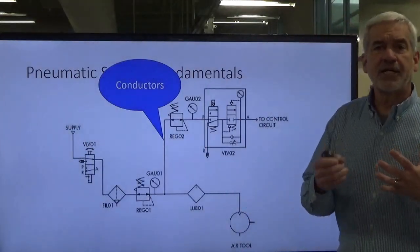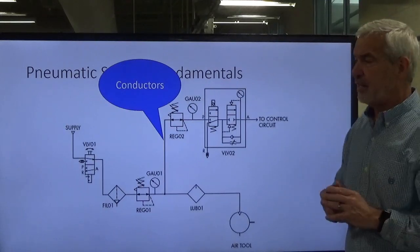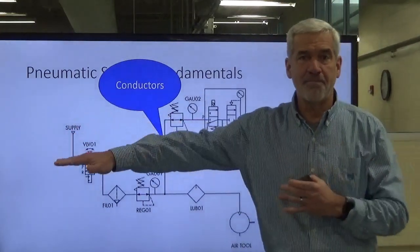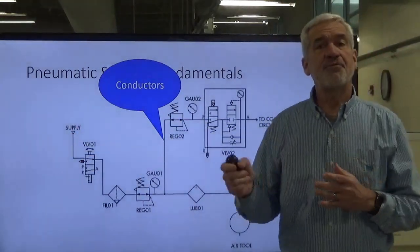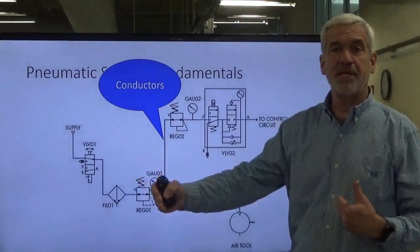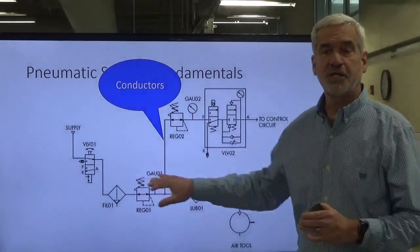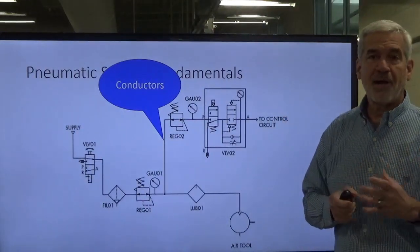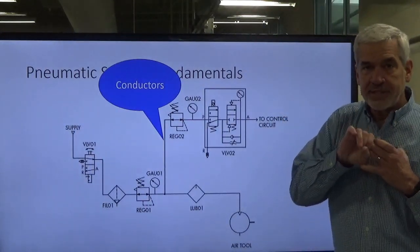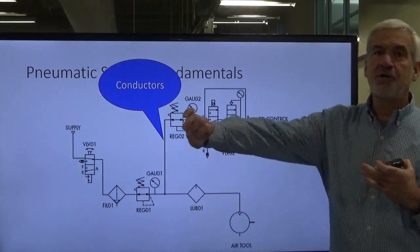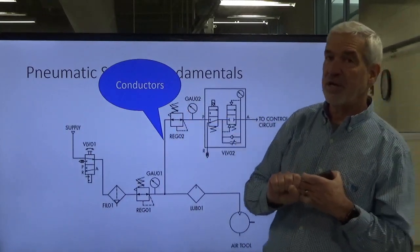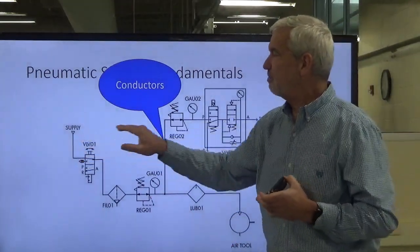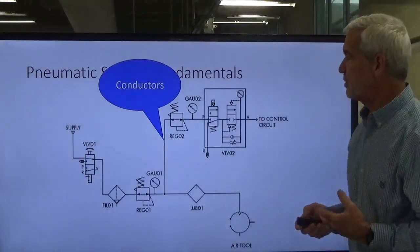Just like in electricity, you have to have conductors. The conductors allow electron flow to move from point A to point B. With pneumatics we still have flow and we still use conductors. Conductors are typically plastic lines, sometimes hard pipe, but there's a conduit in which the air molecules can flow.